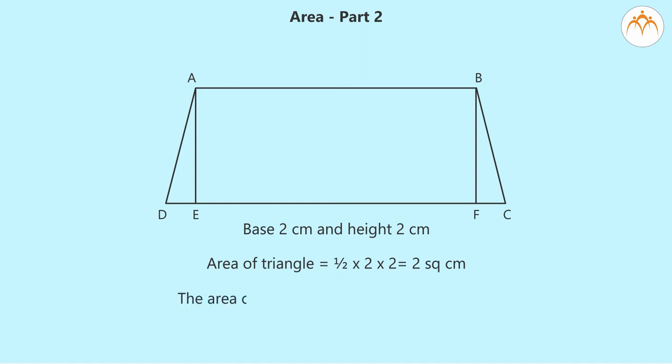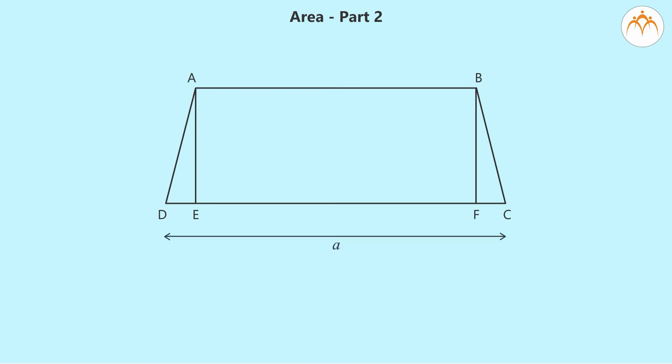The area of the trapezium is 8 plus 2 equal to 10 square centimeters. Exactly in the same way, we can derive the area of the trapezium with parallel sides A and B. Let A greater than B and height H. The rectangle has sides B and H, area is B times H square units.